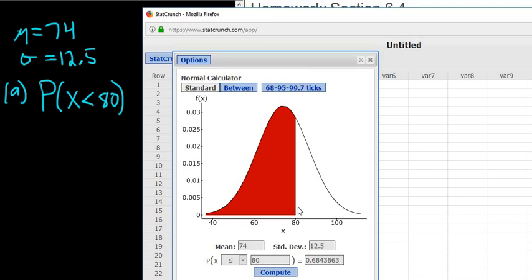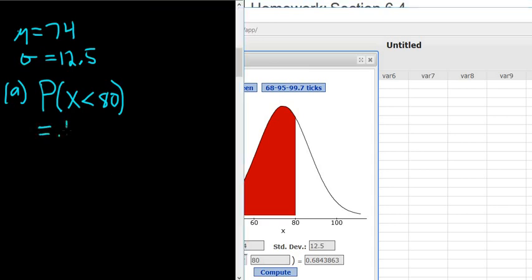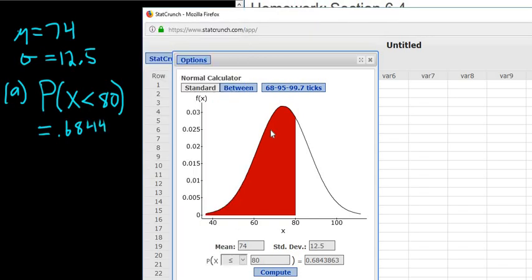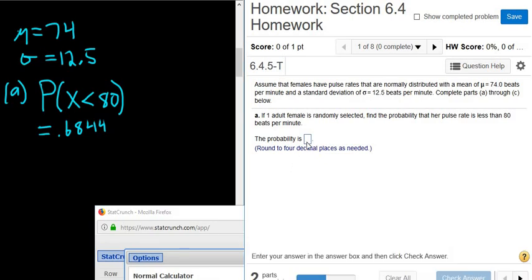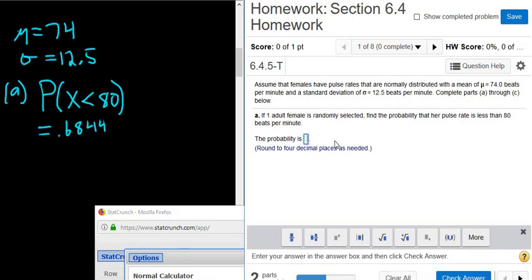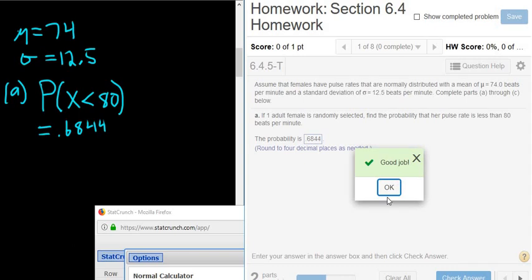There it is, 0.6844. I think it's four decimals. 0.6844, let's find out. Pretty sure it's four. Yeah, four decimals, usually it is four decimals. 0.6844. Good job.